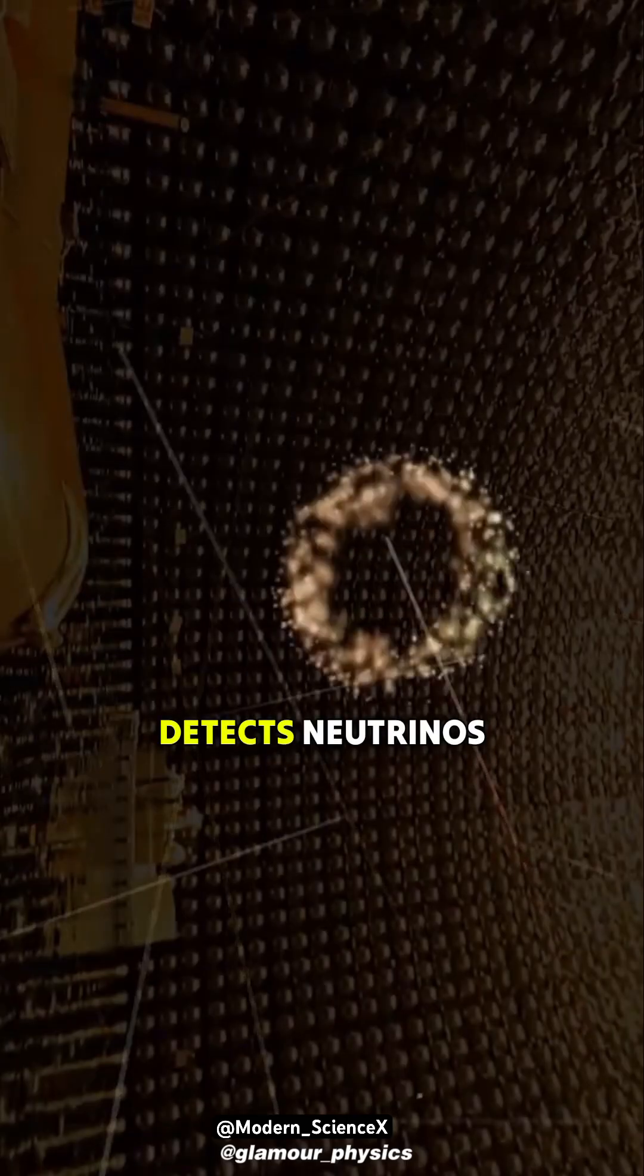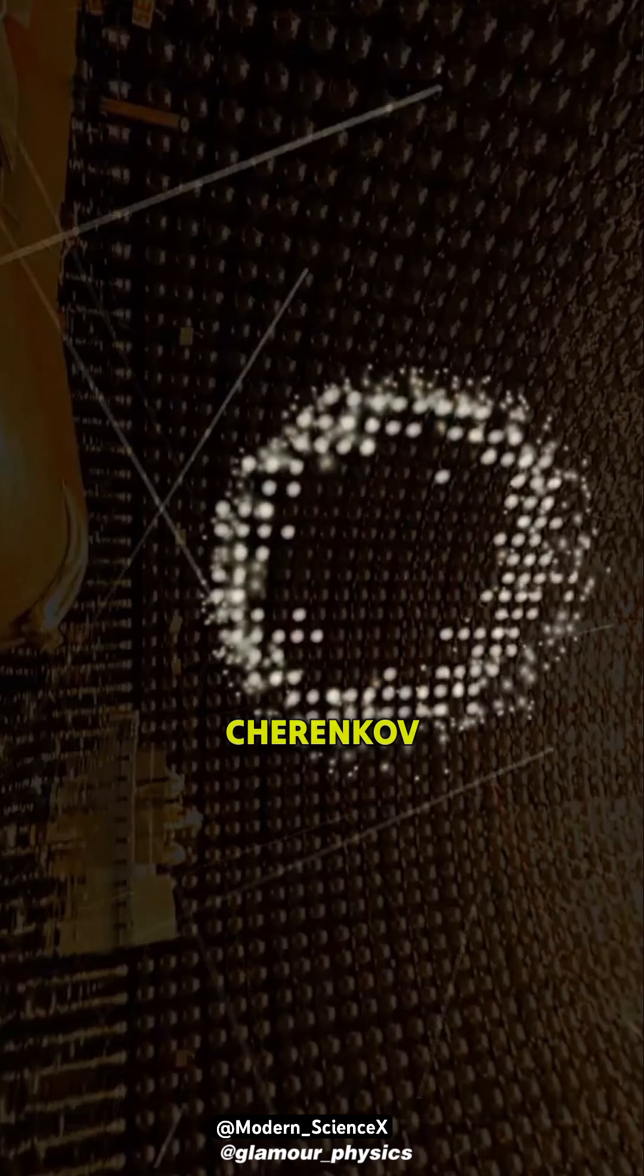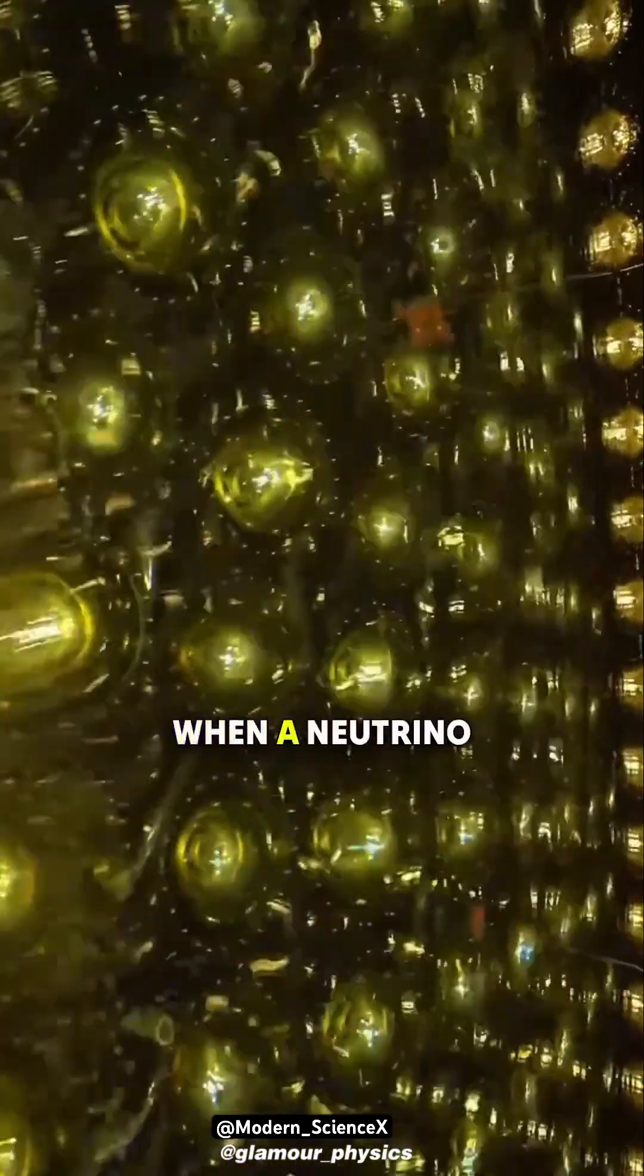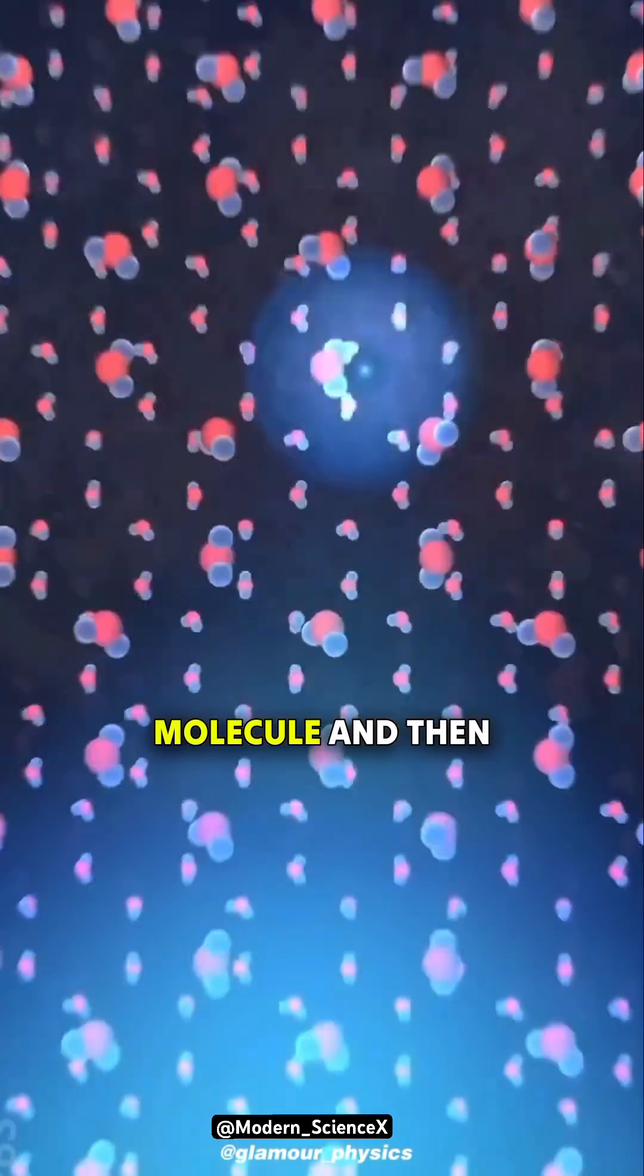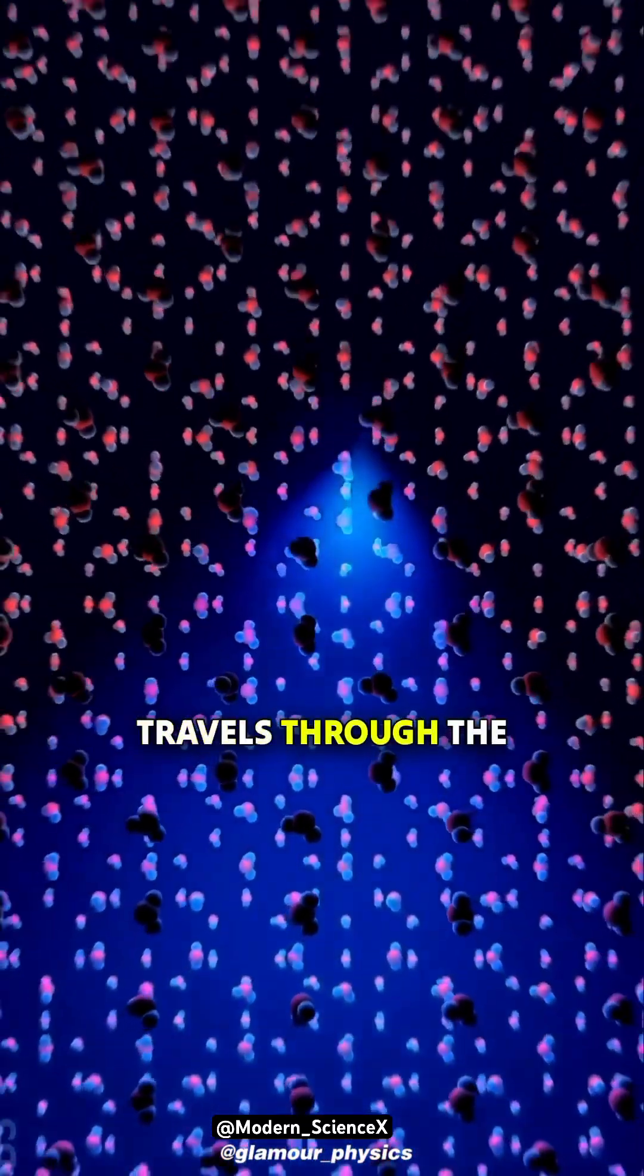Super Kamiokande detects neutrinos by using a technique called Cherenkov radiation. When a neutrino interacts with a water molecule, it can knock an electron out of the molecule, and this electron travels through the water at high speed.